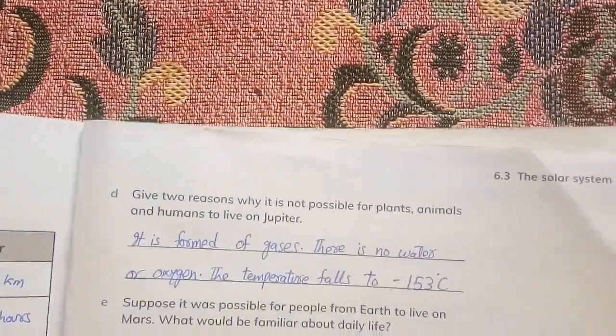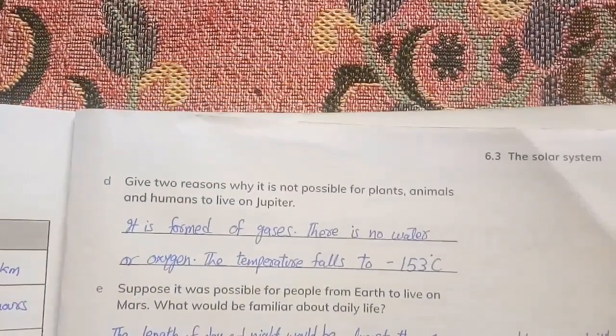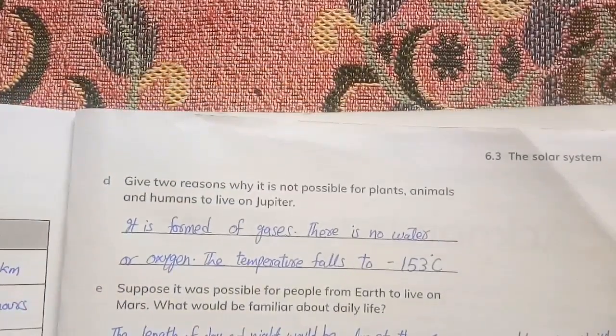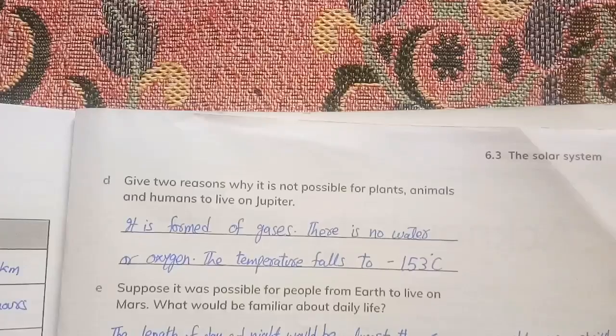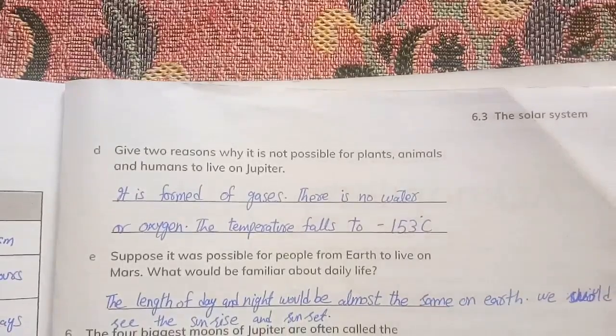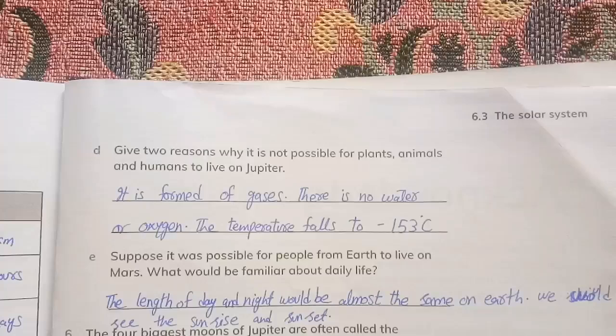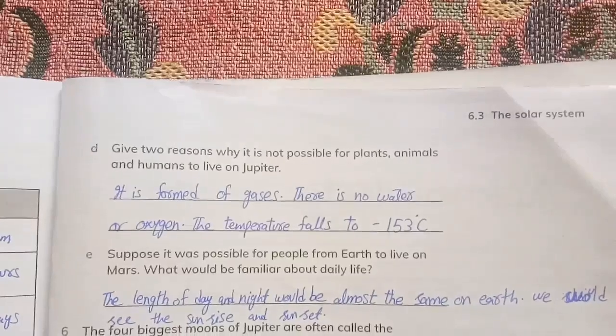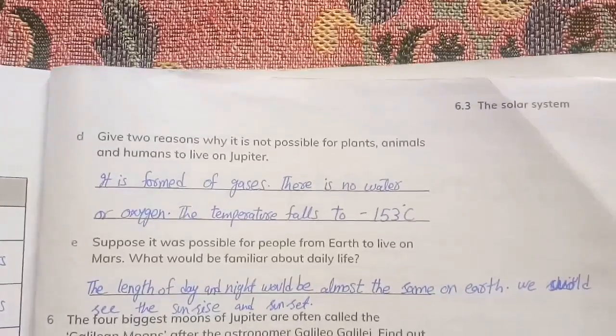Give two reasons why it is not possible for plants and animals to live on Jupiter. It is formed of gases. There is no water and oxygen. The temperature falls to minus 153 Celsius. Suppose it was possible for people from Earth to live on Mars. What would be familiar about daily life? The length of day and night would always be the same on Earth. We would see the sunrise and sunset.